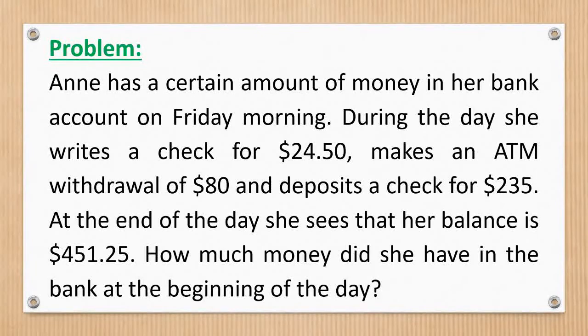Ann has a certain amount of money in her bank account on Friday morning. During the day, she writes a check for $24.50, makes an ATM withdrawal of $80, and deposits a check for $235. At the end of the day, she sees that her balance is $451.25. How much money did she have in the bank at the beginning of the day?